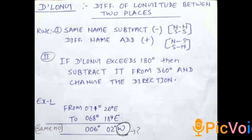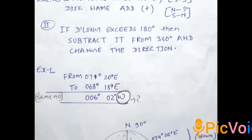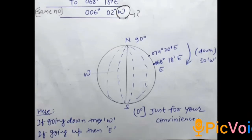Here we will find direction in this way. Concentrate on the diagram. Just for convenience, we have considered South as 0 degree and North as 90 degrees. So we are going from 074 degree 20 minute East to 068, so 074 will be lying in the eastern direction.